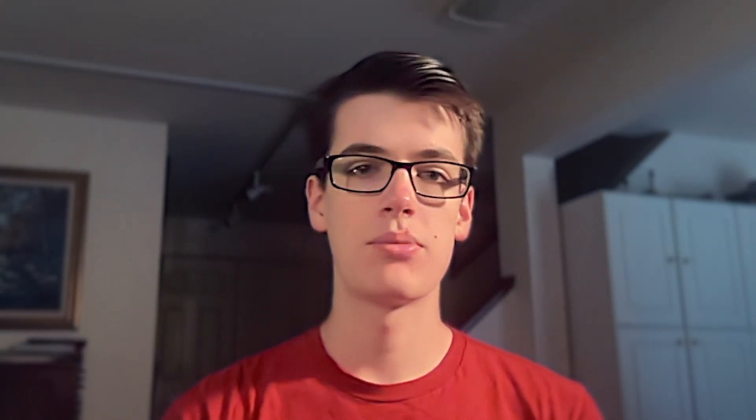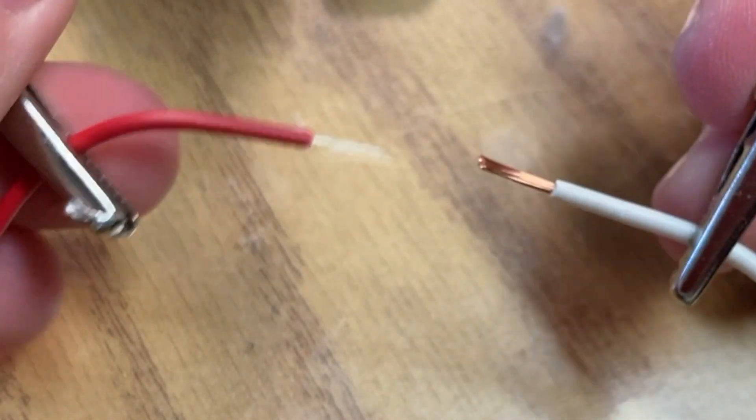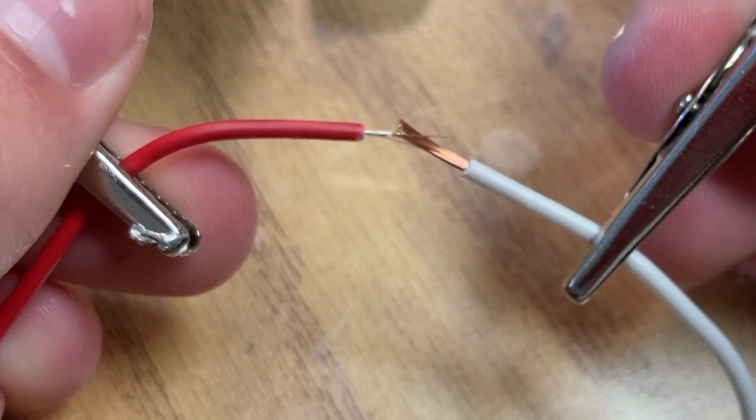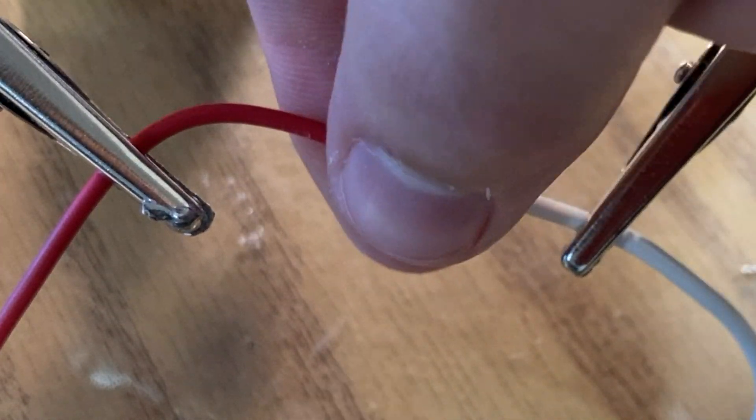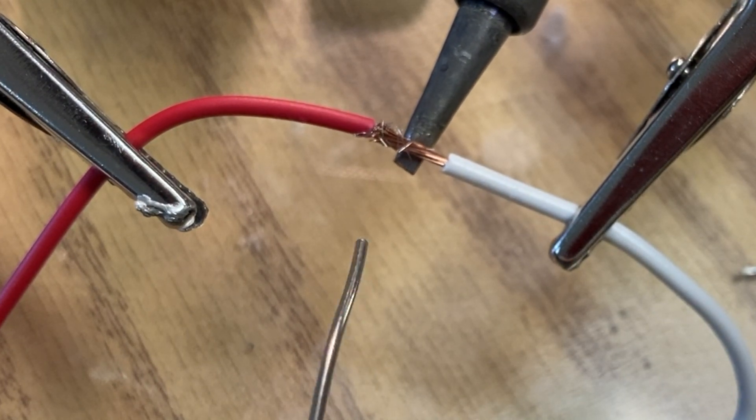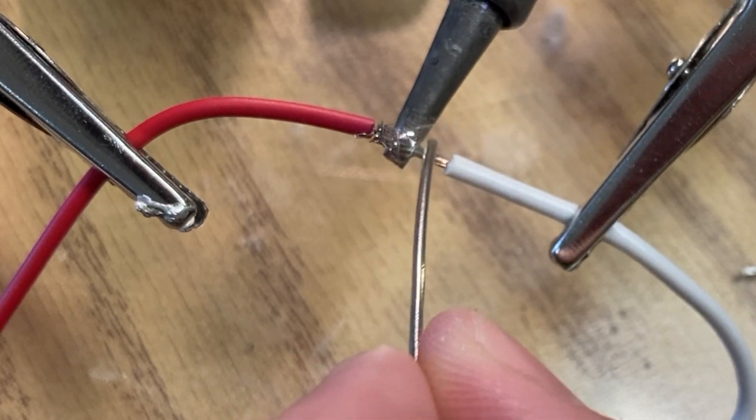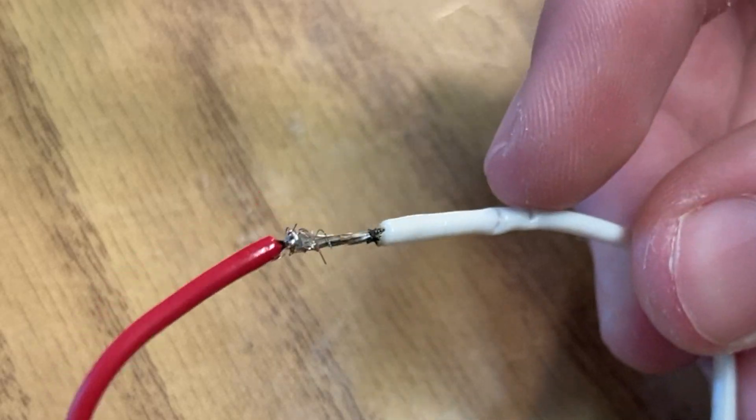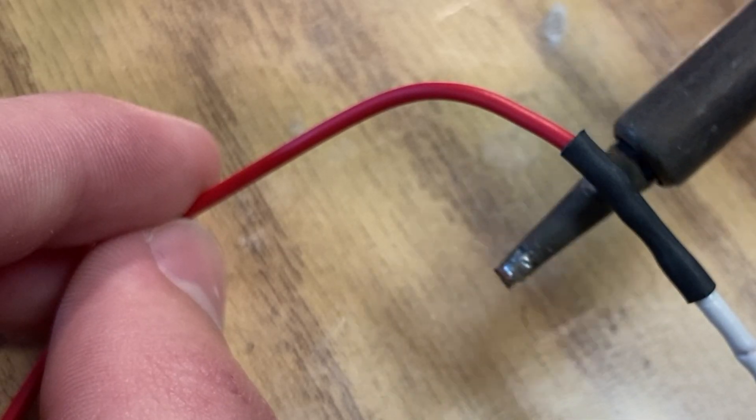But what if your wire isn't quite long enough? Well, we can extend it. Now there's a couple of ways to do this, but what I like to do is take two untinned wires, place them in my helping hands and overlap the stripped sections. Then I twist them together to make sure there aren't any weird strands sticking off, and bring in the soldering iron from below to heat both wires. Bring in the solder from above and let the heat and gravity make a perfect joint. If you have heat shrink tubing, you can even slide that over, melt it, and not have to worry about short circuits.